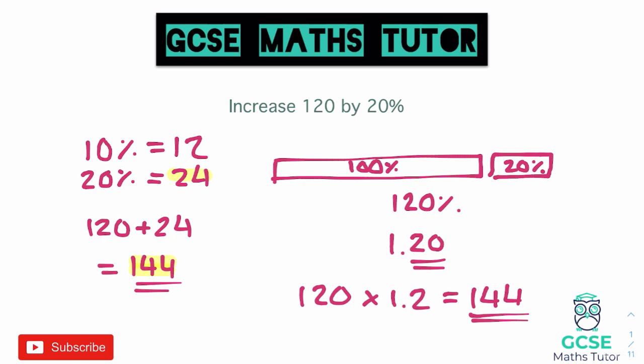When we are using a calculator method, we need to know how to turn the percentage into the decimal — thinking about the fact that it has to be one point, and then that increase in the decimal. Another example: let's say we were increasing by 30%. What would an increase of 30% be? Well, instead of being 1.2 or 1.20, it would be 1.30. It just follows this little pattern. So you don't have to draw the bars. All you have to know is that if you are increasing by a percentage, it's one point, and then whatever that percentage is afterwards. So in the case of 20 it's 1.20, in the case of 30 it's 1.30. Let's have a look at a few extra examples.